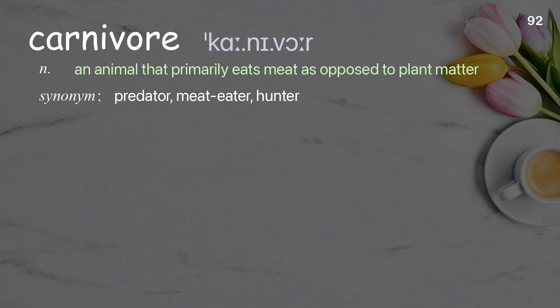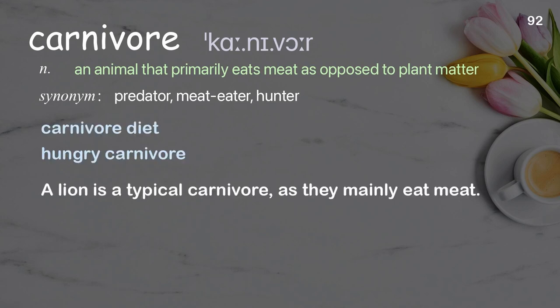Carnivore. An animal that primarily eats meat as opposed to plant matter. Examples: carnivore diet, hungry carnivore. A lion is a typical carnivore, as they mainly eat meat.